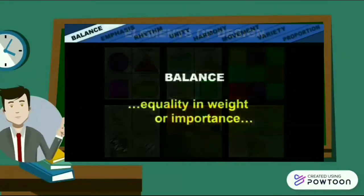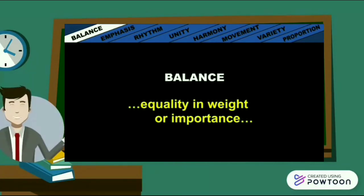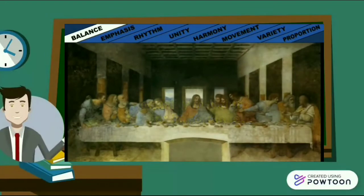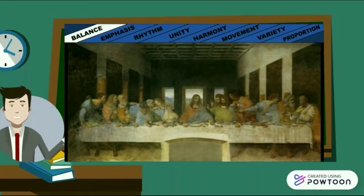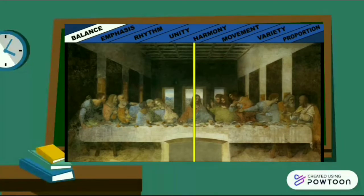Balance is a Principle of Design. A feeling of balance results when the elements of design are arranged to create the impression of equality in weight or importance. In The Last Supper by Leonardo da Vinci, the artist used the Principle of Balance by creating a symmetrical composition. The background architecture is symmetrical, with figures placed symmetrically within it — this is known as formal or symmetrical balance — creating a stable, confident feeling.